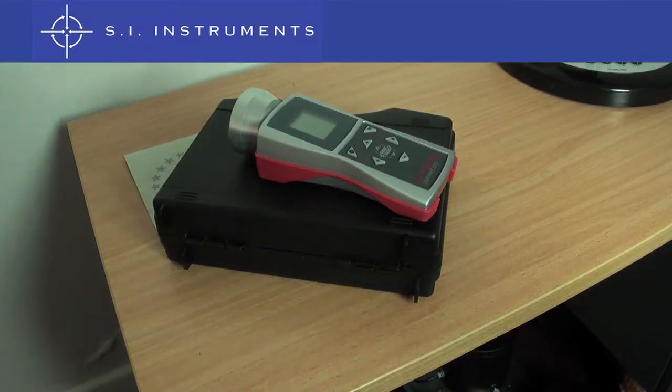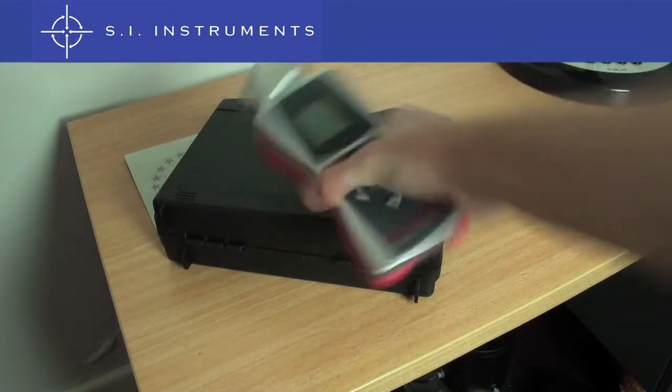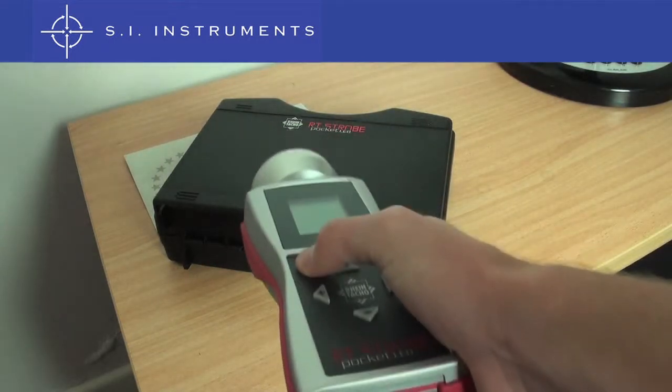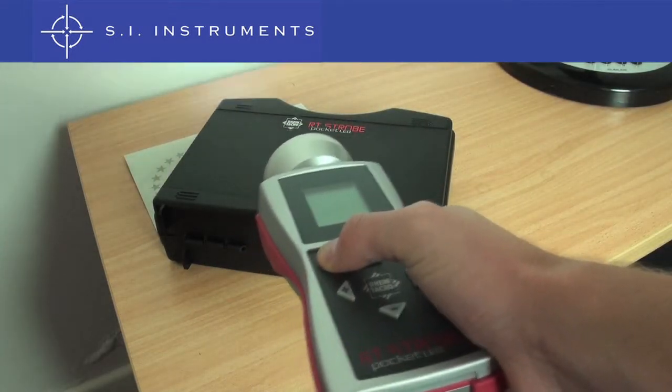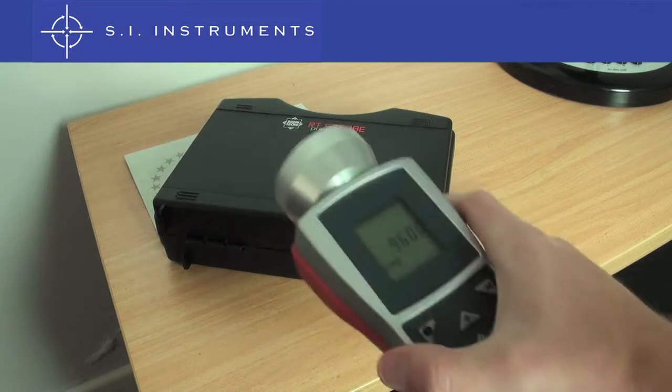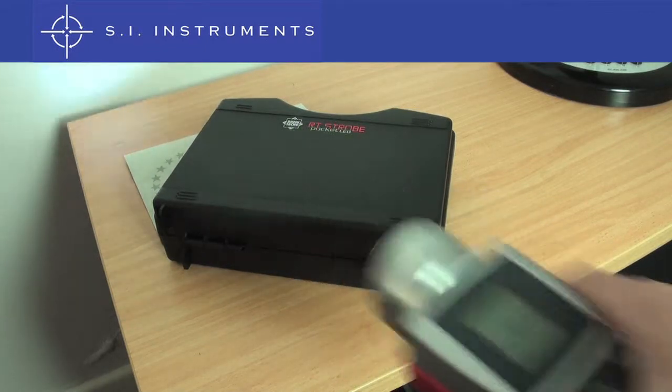To operate the unit, simply turn it on and by default it starts at 1000 flashes per minute or whatever setting was last used. The unit starts to flash immediately and is ready for operation.